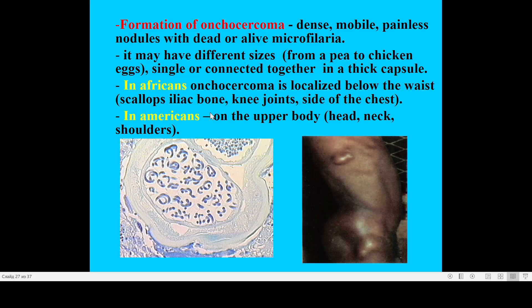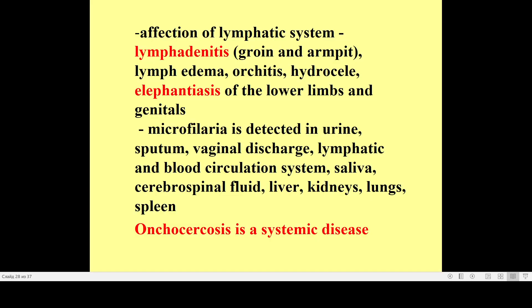In Africa, nodules are localized below the waist; in the American type, on the upper part of the body — though this distinction is not strict. Affection of the lymphatic system is associated with lymphadenitis. Signs of damage to the lymphatic system are practically the same as for Wuchereriasis: lymphatic edema, orchitis, hydrocele, and formation of elephantiasis of the lower extremities and genitals.